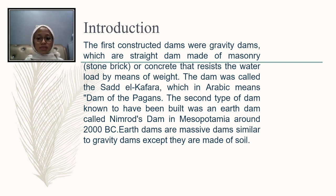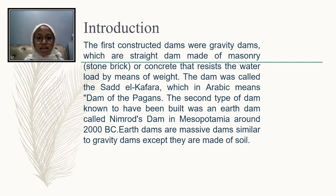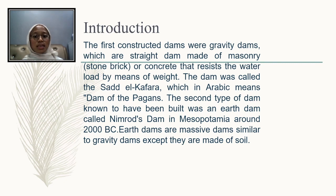Earth dams are massive dams similar to gravity dams except they are made of soil. Dams have one of the most important roles in utilizing water resources. They were constructed long years ago before gaining present information about hydrology and hydromechanics. They are not ordinary engineering buildings. Dam projects, which are useful in meeting the demand of water at desired times and in regulating stream regimes, have undertaken an important function in the development of civilization.